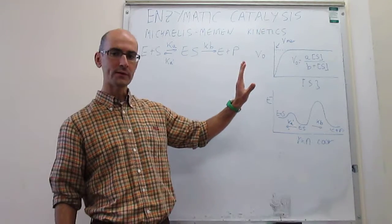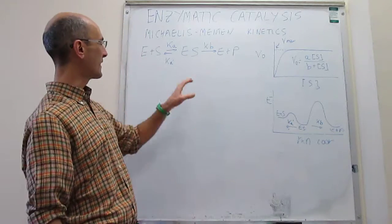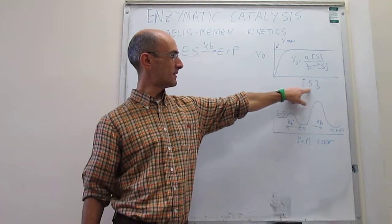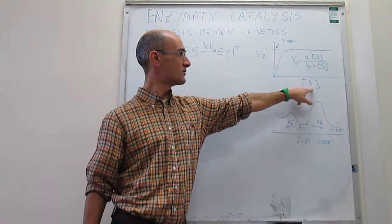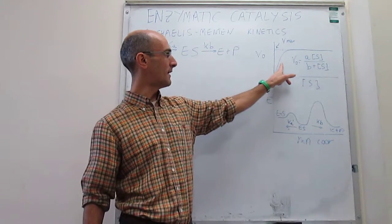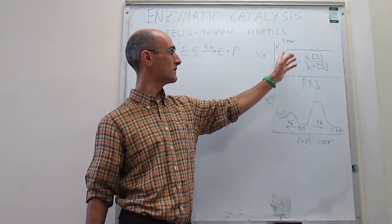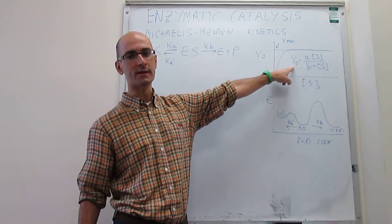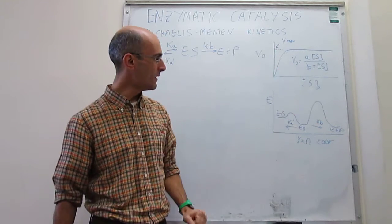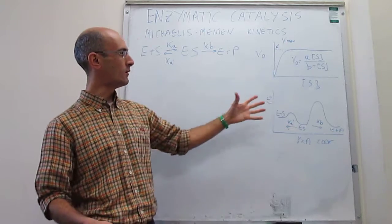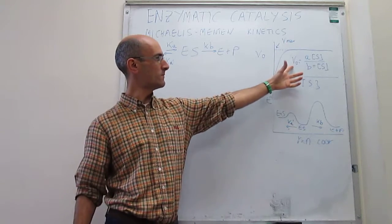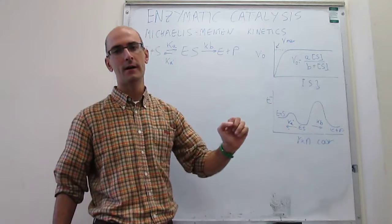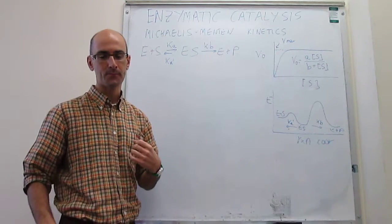When we measure the initial rate for an enzyme-catalyzed reaction as a function of the substrate concentration, what we actually get is a function with a very well-defined expression. The question is whether we can obtain this expression and find values for the constants A and B by looking at the reaction mechanism.